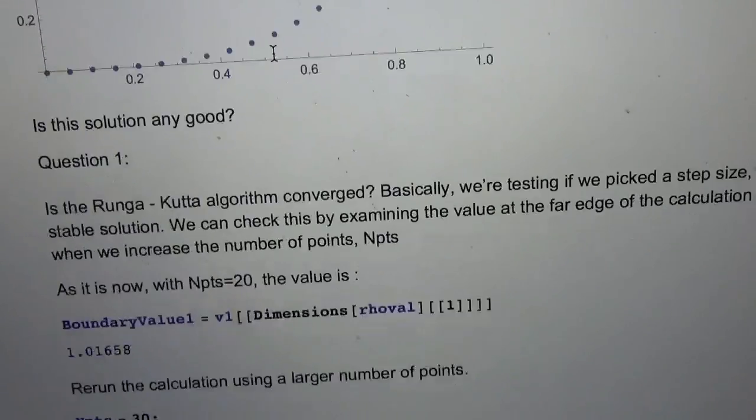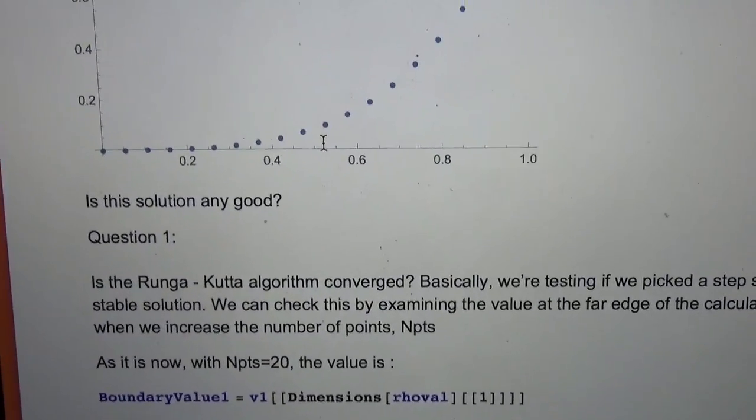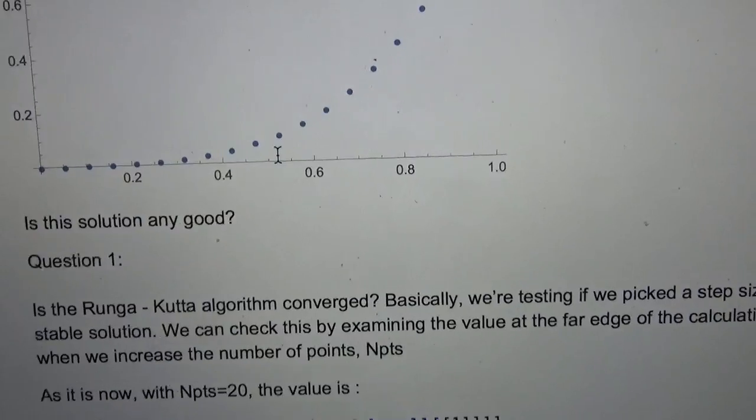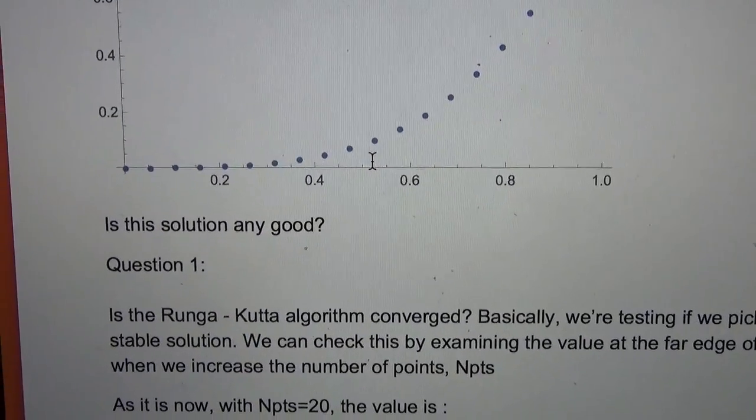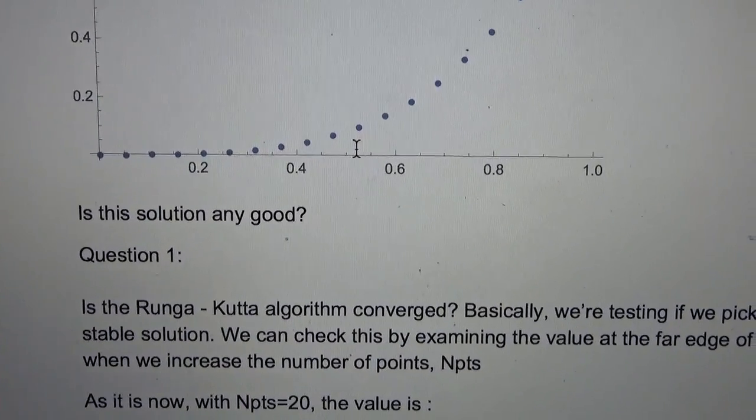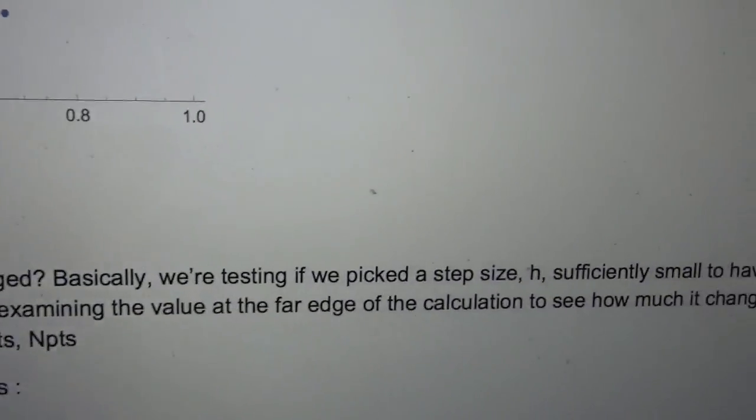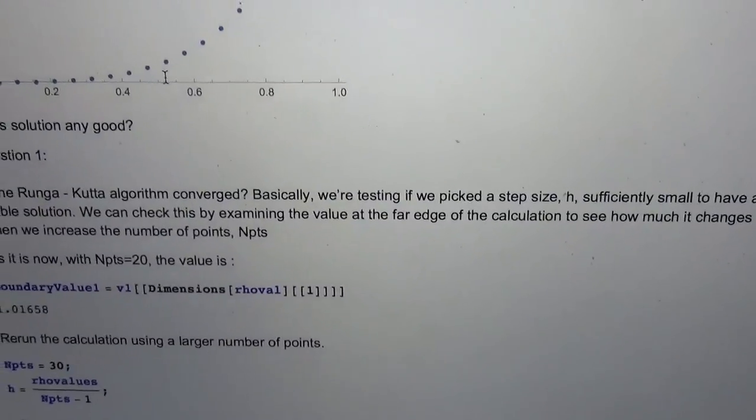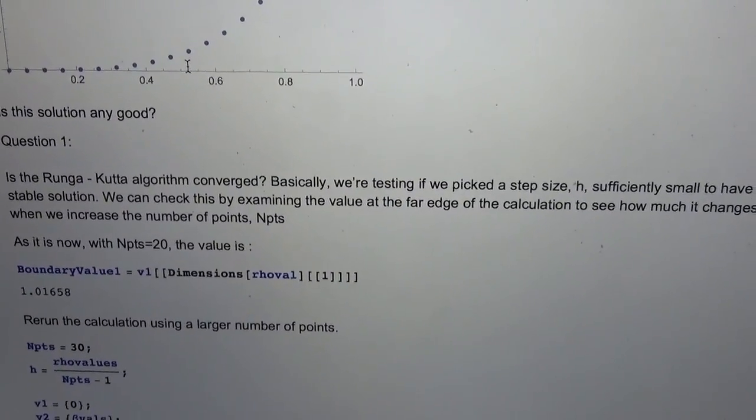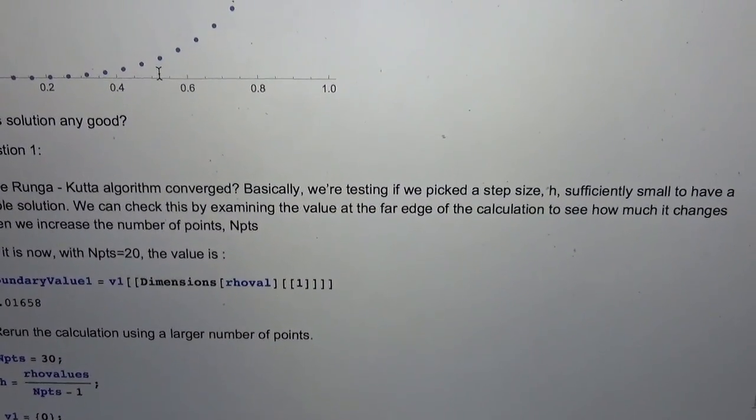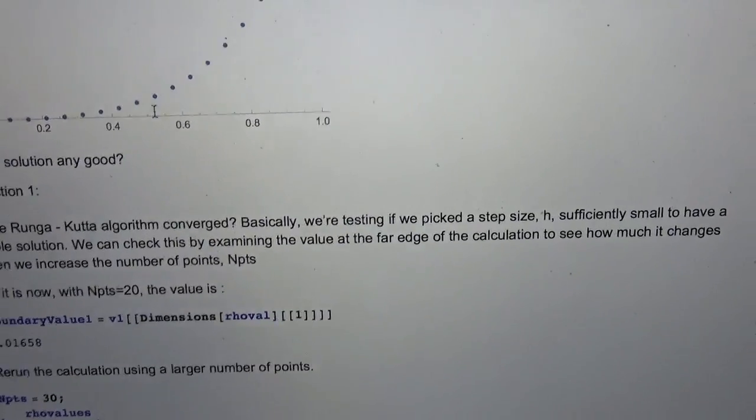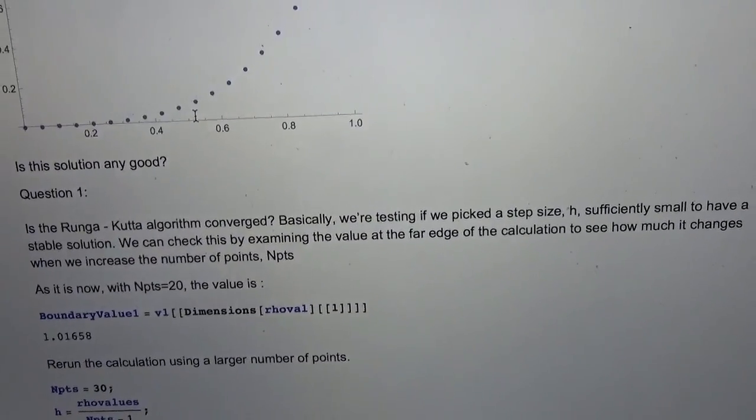Looking at this, the first question is, is this any good? Actually it's not the first question, it's the only question, right? The way to tell if it's any good is first off to see if the Runge-Kutta is converged. Basically, we're looking if the step size is small enough to result in a converged solution.